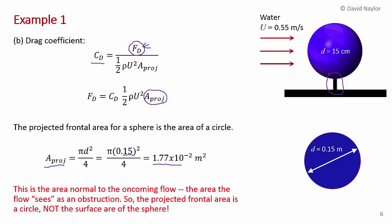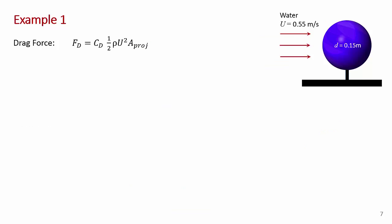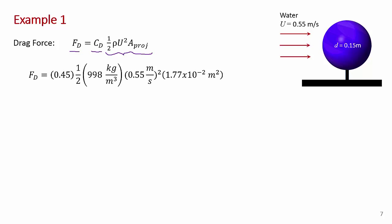The projected frontal area A proj is the area normal to the oncoming flow — the area that the flow sees as an obstruction. It is a circle, not the surface area of the sphere, which is a common student error. The drag force expression is the drag coefficient times the stagnation pressure at the front stagnation point times the projected area. With Cd = 0.45, density of water = 998 kg/m³, free stream velocity = 0.55 m/s, and A proj = 1.77×10⁻² m².